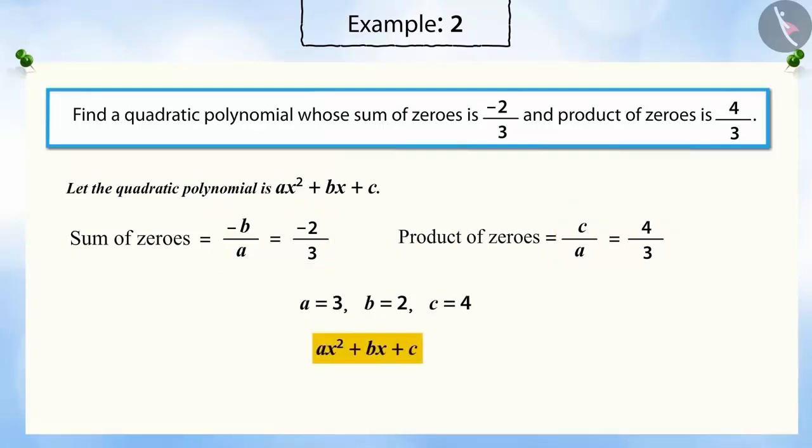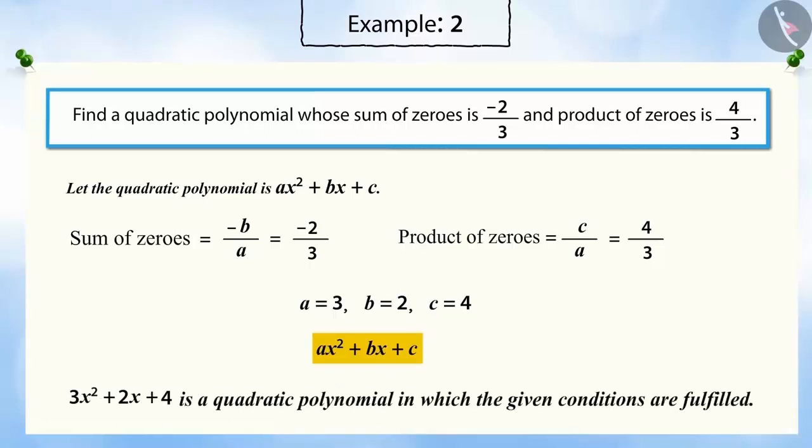Substituting the values of a, b, and c, we get a quadratic polynomial 3x² + 2x + 4, where we get a quadratic polynomial in which the given conditions are fulfilled.